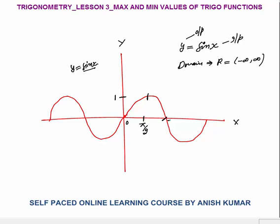sin(π) = sin(180°) = 0. sin(3π/2) = sin(270°) = −1. sin(2π) = 0 as well. The same is true for the negative side: sin(−π/2) = −1, sin(−π) = 0, sin(−3π/2) = 1, sin(−2π) = 0. This wave pattern will continue.